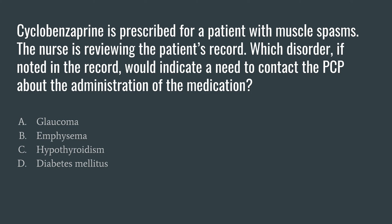Answer A is glaucoma — that's most likely going to be our correct answer option, but let's continue through. B is emphysema, C is hypothyroidism, and D is diabetes mellitus. Glaucoma is our correct answer. Emphysema, hypothyroidism, and diabetes mellitus do not have an association with cyclobenzaprine or Flexeril.